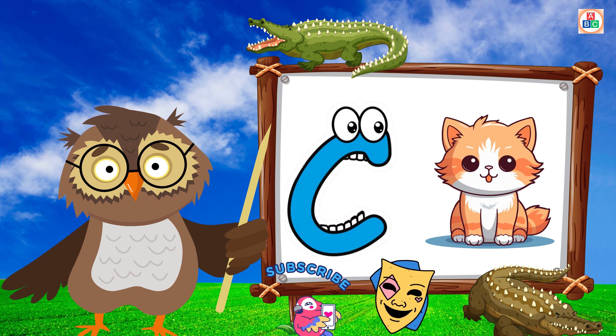E is for Elephant. E-E-Elephant. F is for Frog. F-F-Frog. G is for Goat. G-G-Goat. H is for Hand. H-H-Hand.